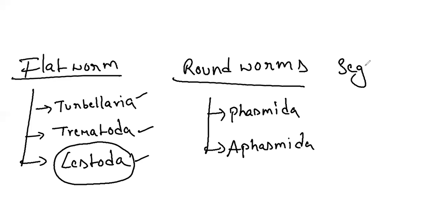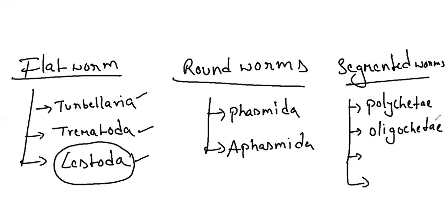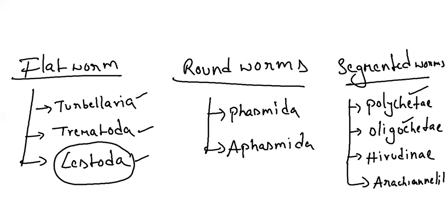Next we have the segmented worms — annelida. Under segmented worms you have four classes. You have Polychaeta — based on the chaete — and Oligochaeta. Under Polychaeta you will get nereis, and under Oligochaeta you will get earthworm. And next you have Hirudinea, and finally you have Archiannelida. Under Hirudinea you have all the leeches.